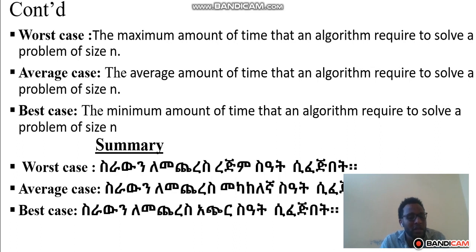So this is the summary. In the worst case, the algorithm requires the maximum amount of time to solve a problem of size n. In the average case, it requires the average amount of time. In the best case, it requires the minimum amount of time.